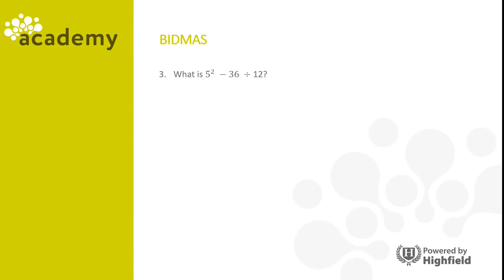Here's another calculation: what is five squared minus thirty-six divided by twelve? Firstly, calculate five squared — five times five is twenty-five. Division is next: thirty-six divided by twelve is three. So the calculation becomes twenty-five minus three, which is twenty-two.